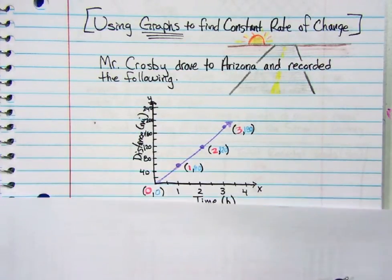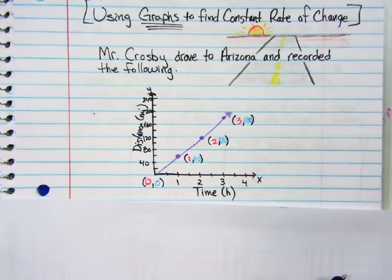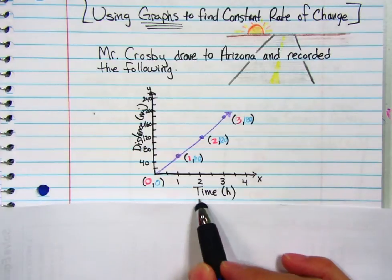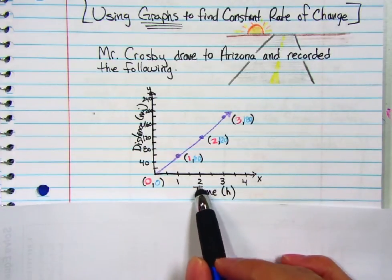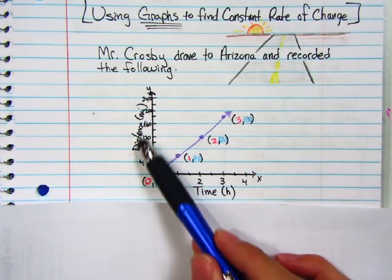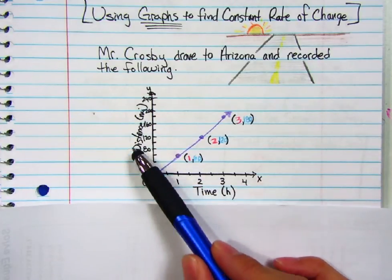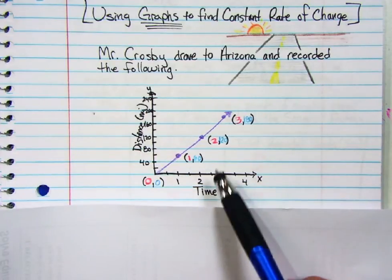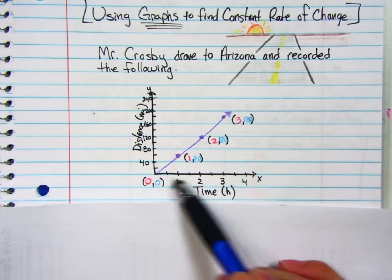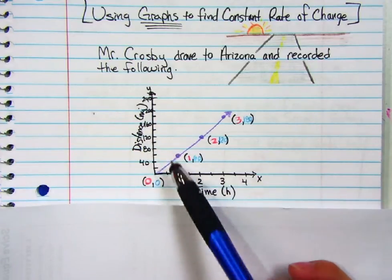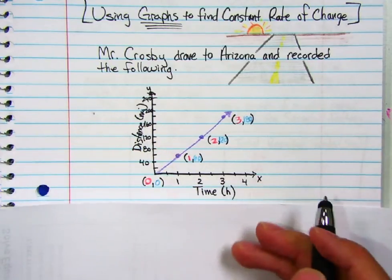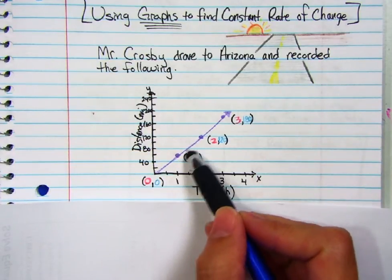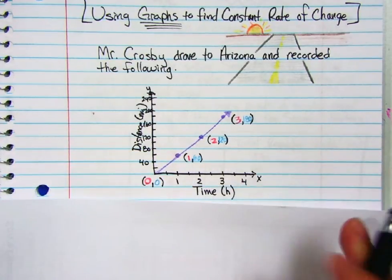He wrote down a chart and a graph. My x-axis is time — that's my independent variable. And over here, my y-axis is distance — my dependent variable. How far he drove depends on how long he drove. Independent is the x-axis, dependent is the y-axis. We'll talk more about this as different lessons come up. So he plots these points: (1, 60), (2, 120), (3, 180).